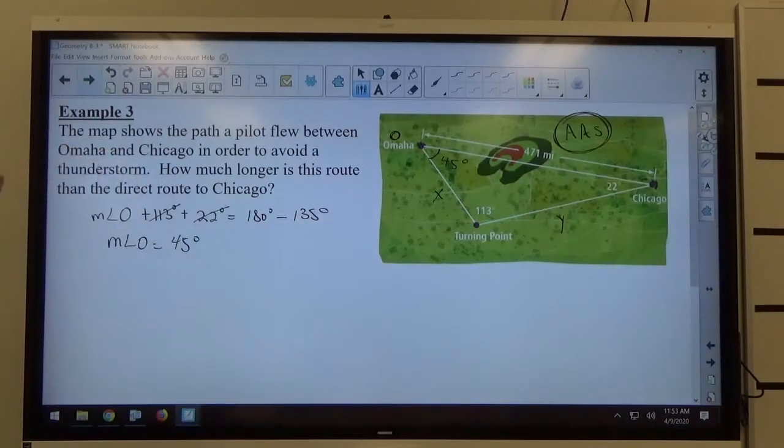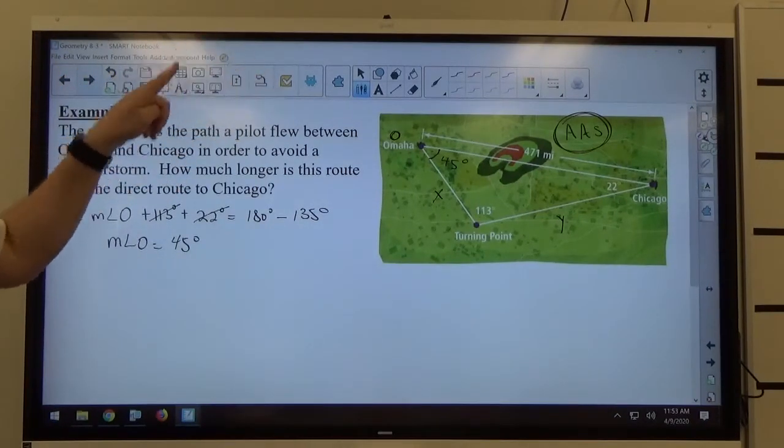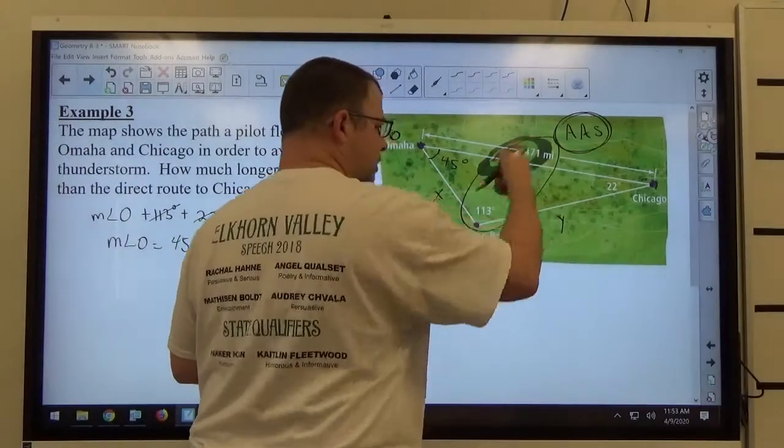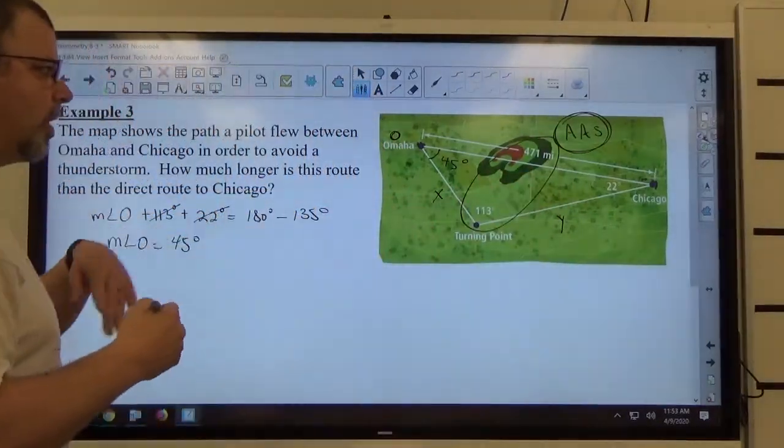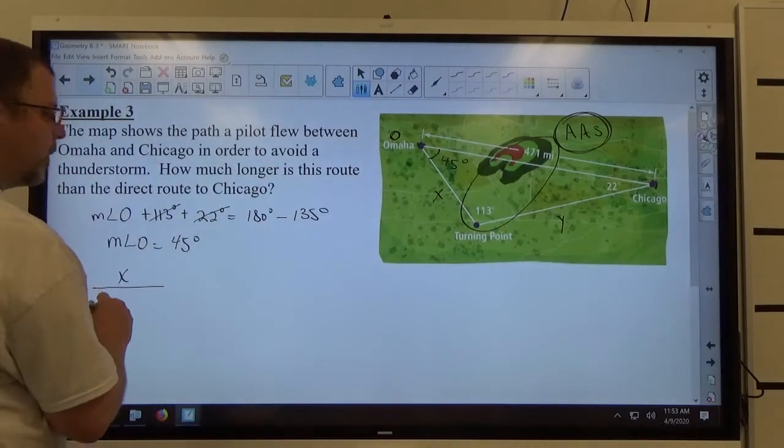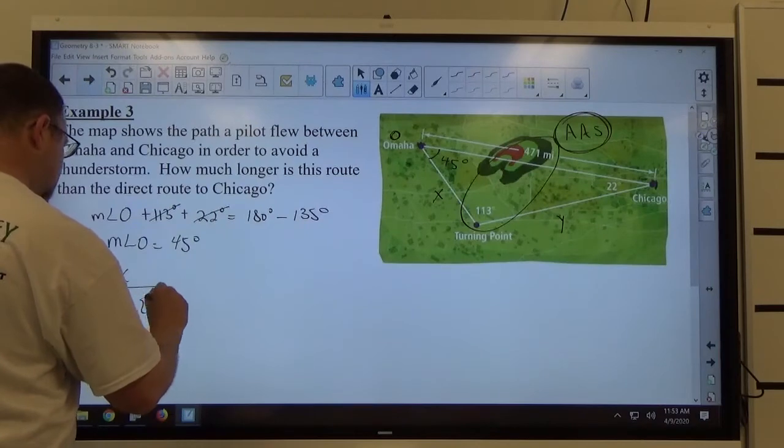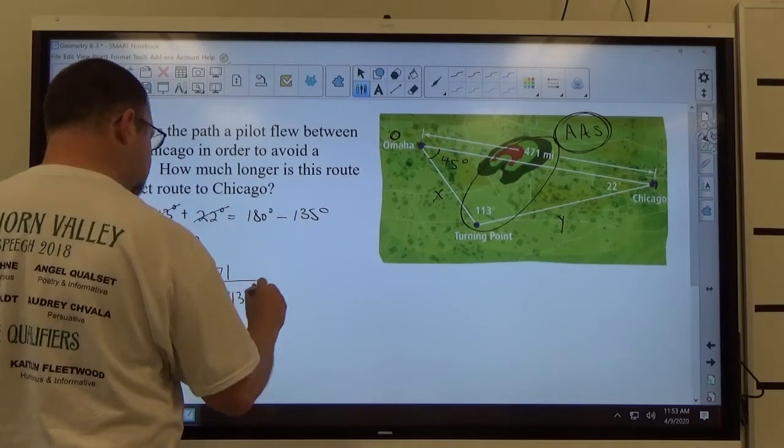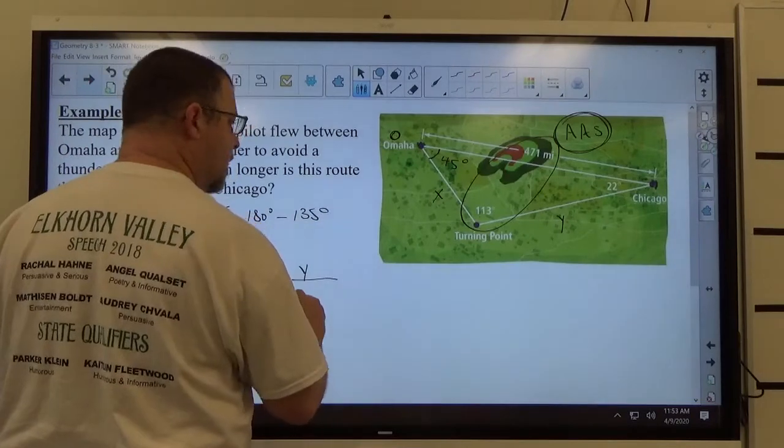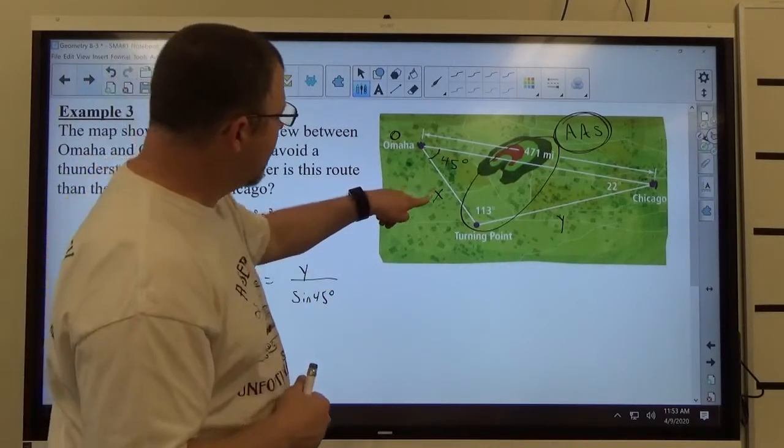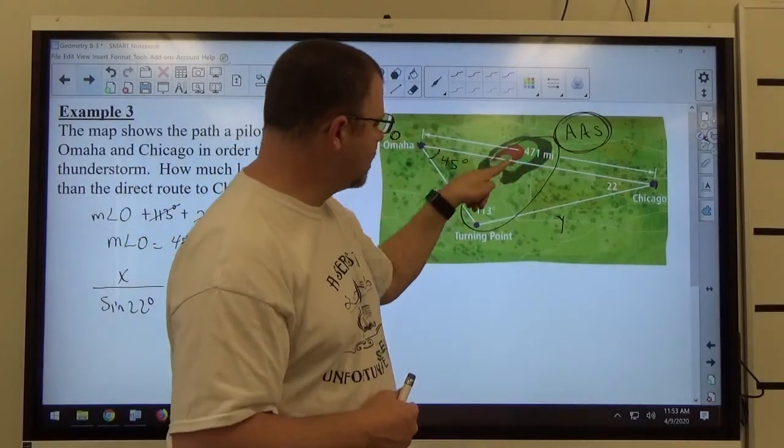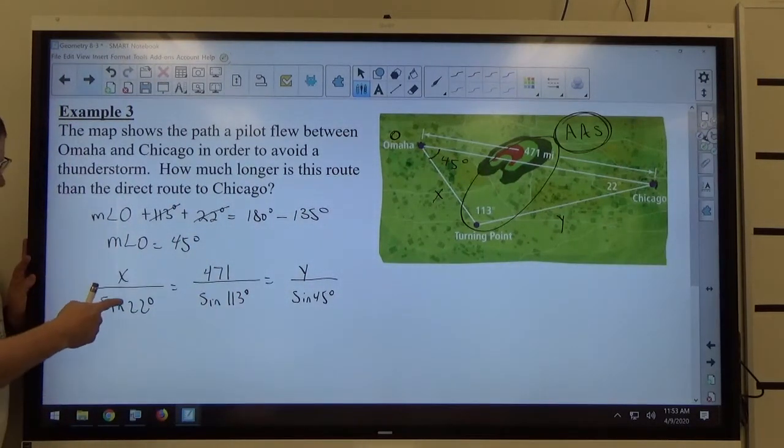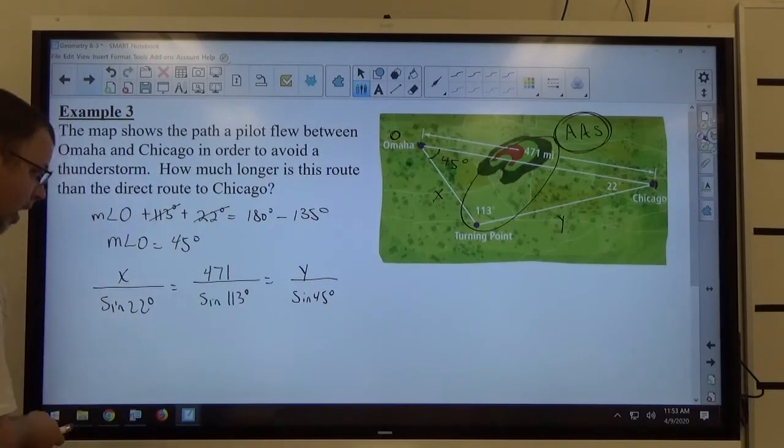I need to know what X and Y both are. So once again, I'm going to have side over sine of angle, side over sine of angle, side over sine of angle. It doesn't matter what order you put them in. And I'm going to put these pieces here in the middle fraction. So I'm going to put X first. So I'm going to put X over the sine of 22 equals 471 over the sine of 113 equals Y over the sine of 45. Side over sine of opposite angle, side over sine of opposite angle, side over sine of opposite angle. Again, sides on top, sines of opposite angles on the bottom. This side's opposite that angle, side opposite angle, side opposite angle.